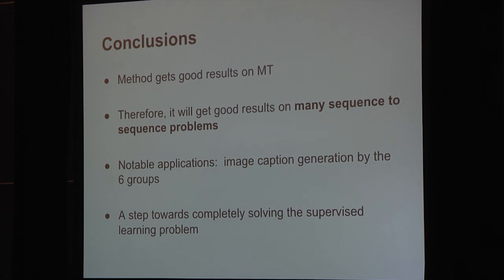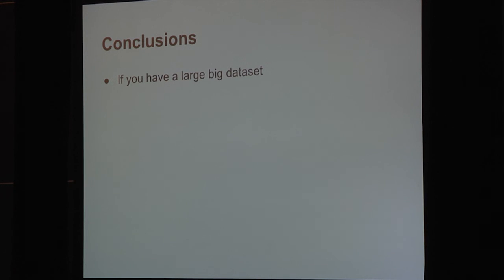To conclude, we have presented a general, simple, primitive approach for solving sequence-to-sequence problems. We showed that it works on machine translation, and machine translation is a problem where you already have good solutions. Therefore, it means that if you have a sequence-to-sequence problem, or if you have something which you want to formulate as a sequence-to-sequence problem, you just apply this and it will work. A notable recent application of ideas like this are the recent image caption generation. I really see this as a step towards completely solving the supervised learning problem. The real conclusion now is that if you have a large big data set, and you train a very large deep neural network, then success is guaranteed. Thank you very much.